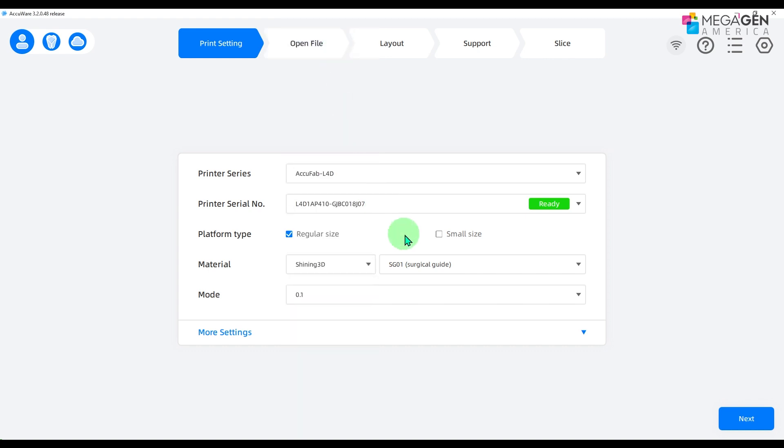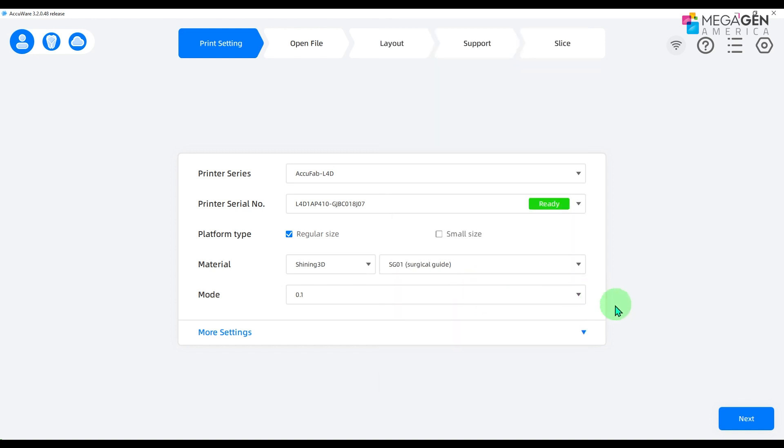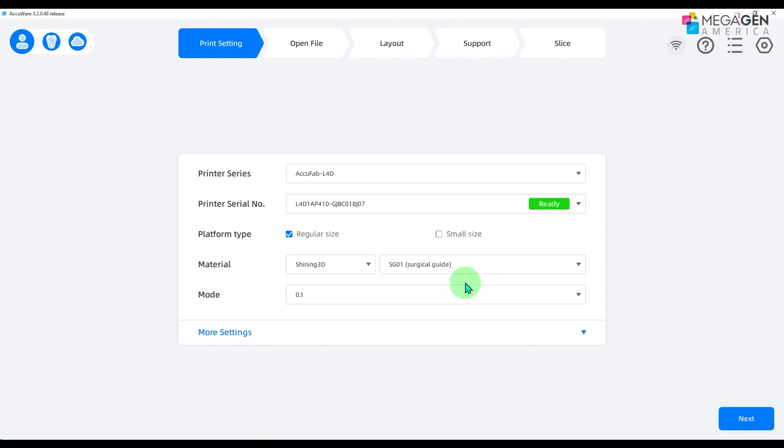Choose the material brand and the type of resin. The good thing about Shining 3D printers are the automatic configurations. So if you purchase the compatible resins, the values are in the system.